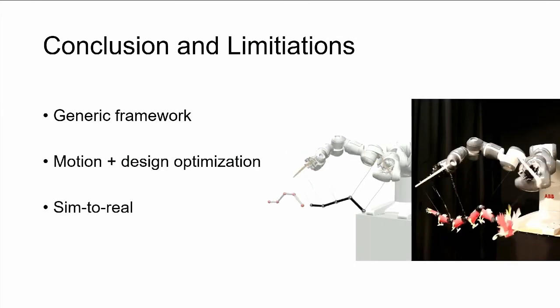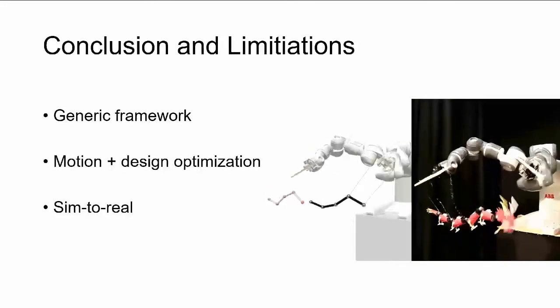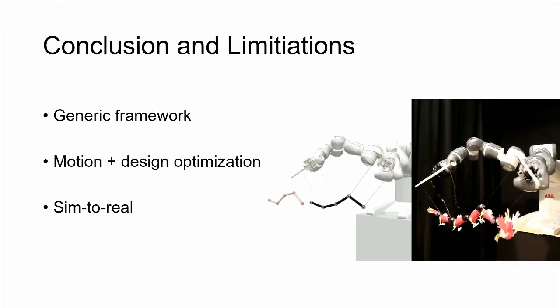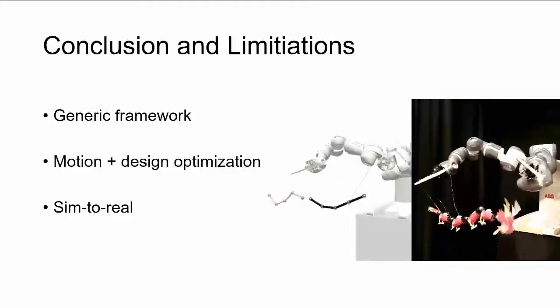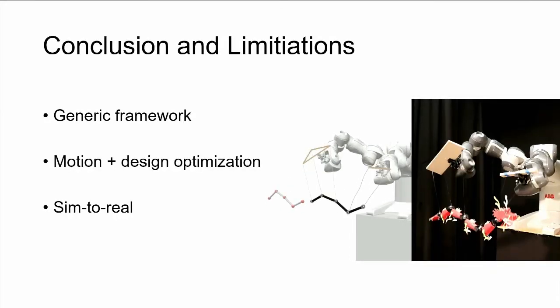We also ran experiments with a couple of physical prototypes. Since we are optimizing directly for joint position commands, the motions received in simulation can seamlessly be transferred to the physical world. Since we are doing this in an open-loop manner, it can result in the limitation that mismatches between simulation and real world can occur. We can start tackling this by adding feedback mechanisms to our framework, which will be part of future investigations.